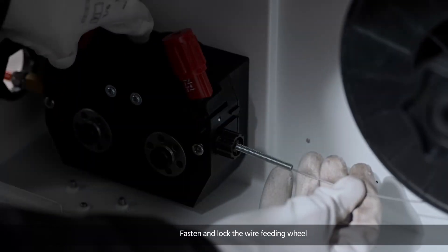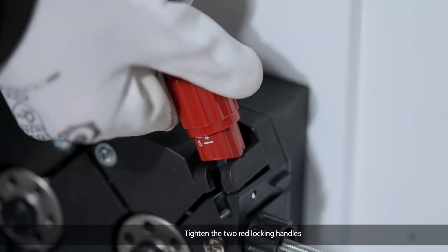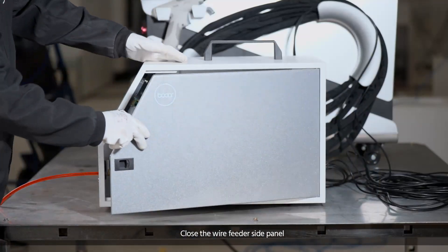Fasten and lock the wire feeding wheel. Tighten the two red locking handles and close the wire feeder side panel.